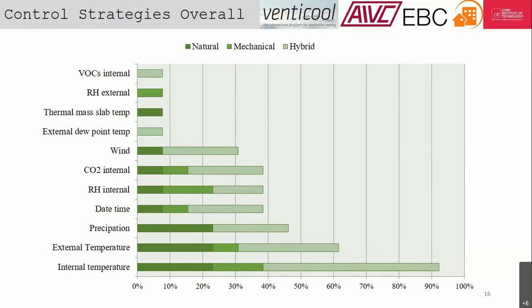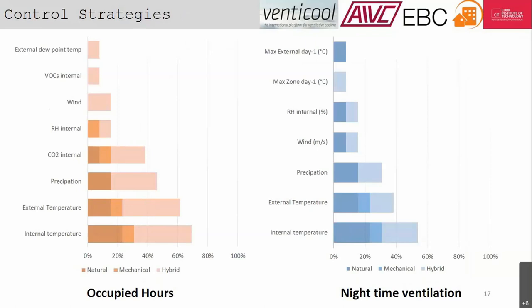We had one example with a fully manual control strategy with no internal temperature input. Breaking that out in terms of occupied hours and systems using daytime or nighttime ventilation, internal and external temperature remain common parameters. There are very few examples where VOCs or external dew point temperature are used during occupied hours, and very little use of max external day temperature or max zone day temperature from the previous day in control strategies to update set points.